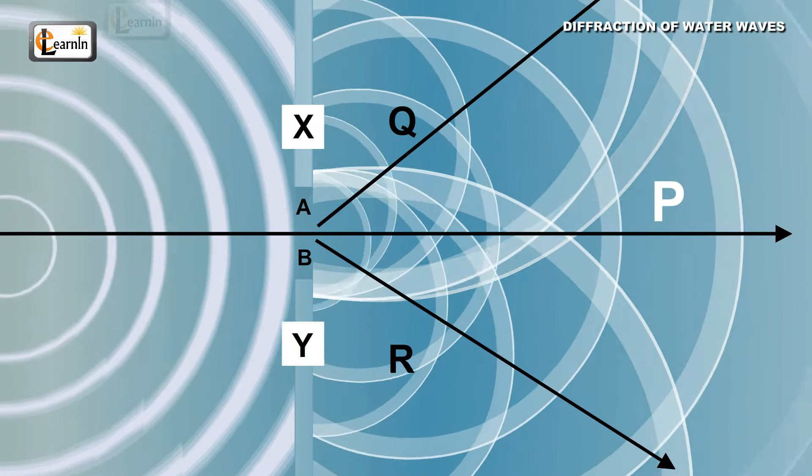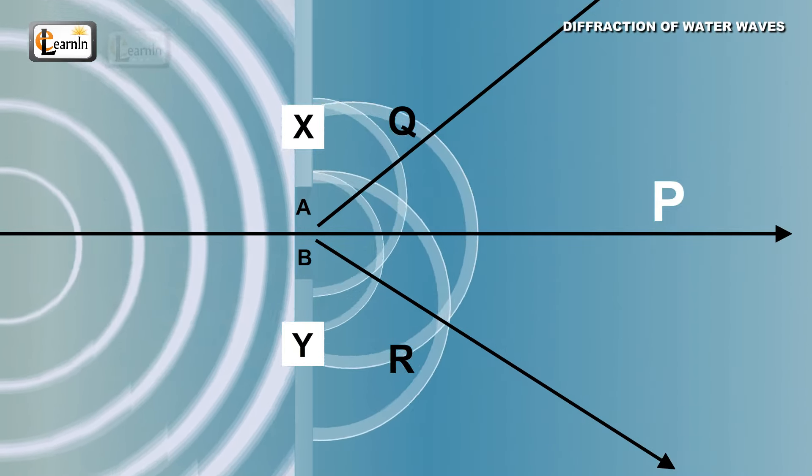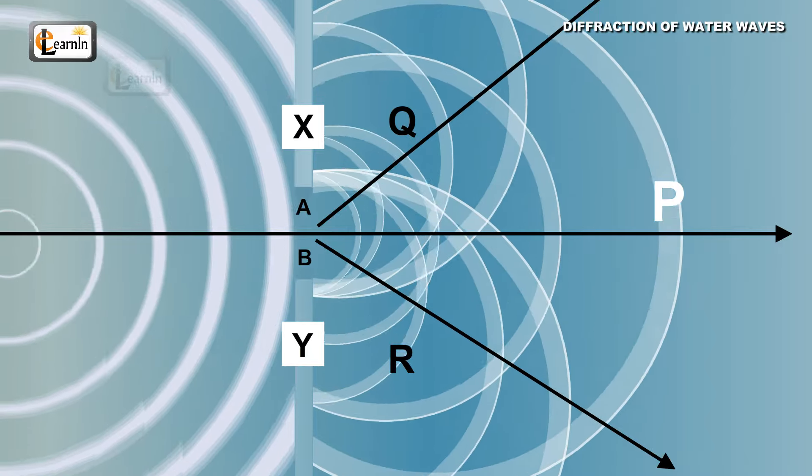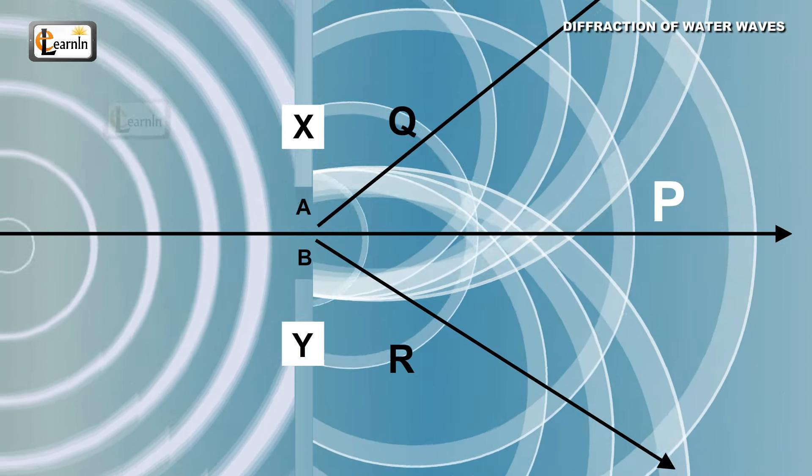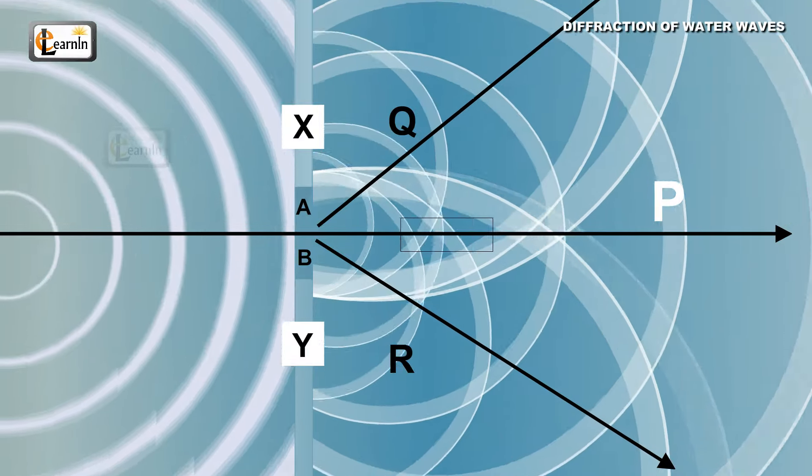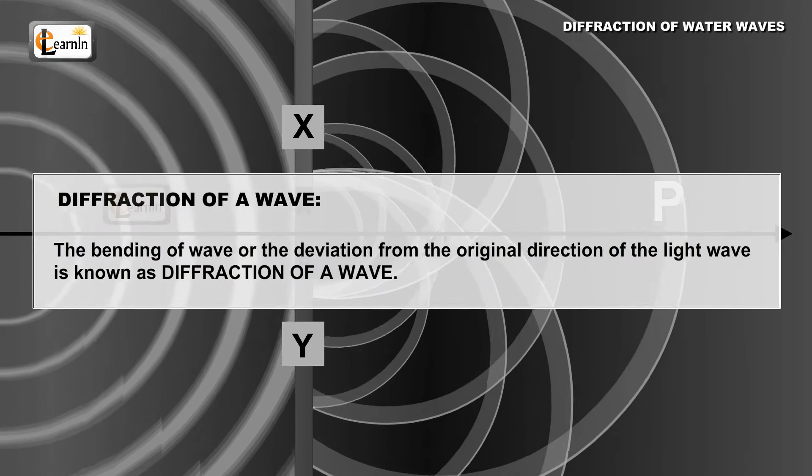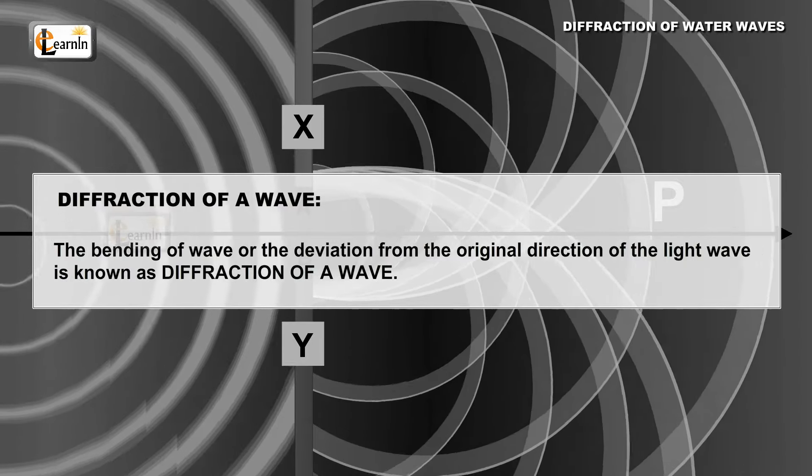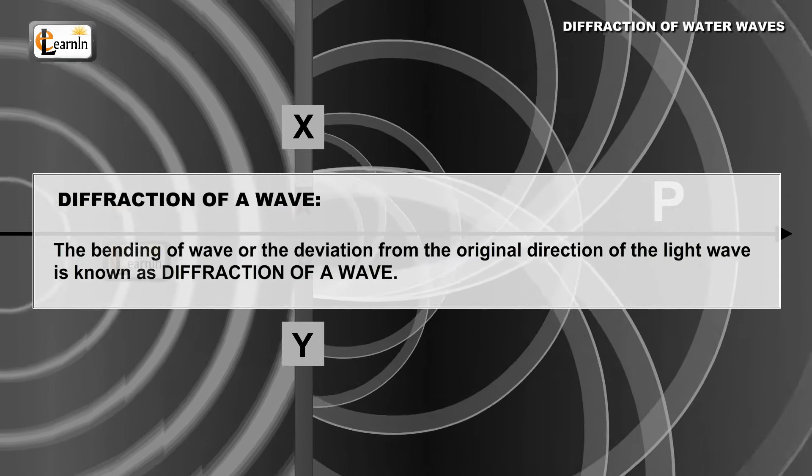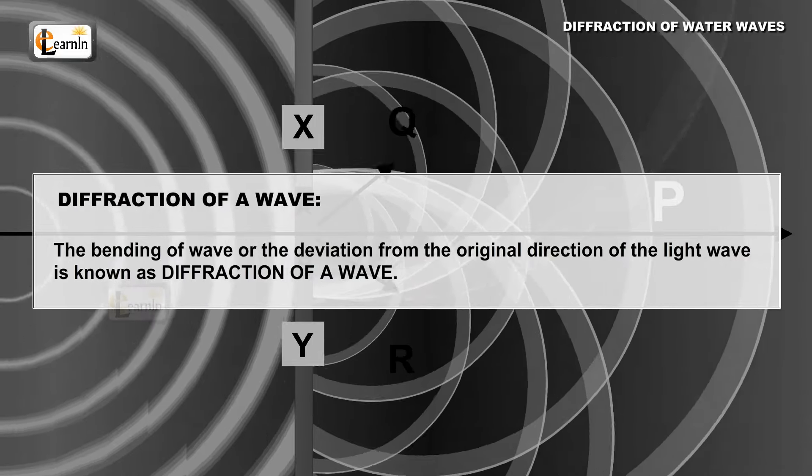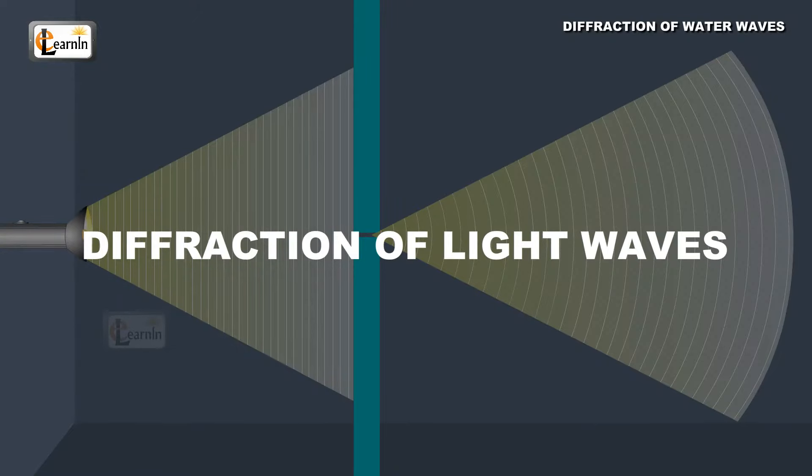This deviation from the original direction of light and formation of a new circular wavefront is due to the bending of waves. This phenomenon is known as the diffraction of light. The bending of a wave, or the deviation from the original direction of light wave, is known as the diffraction of a wave.